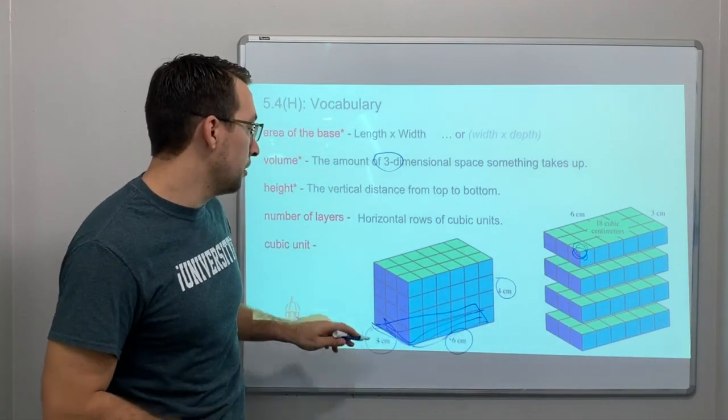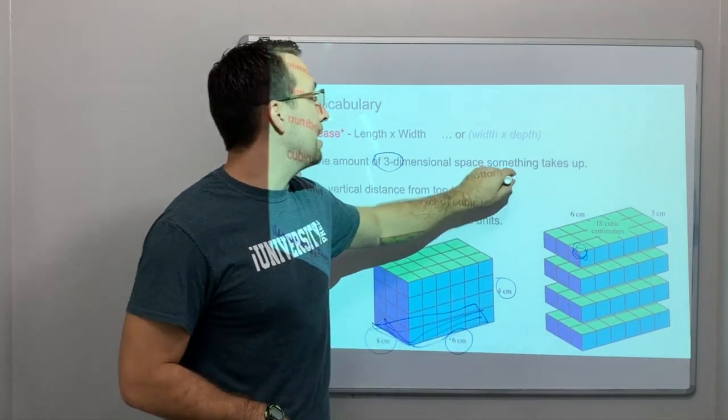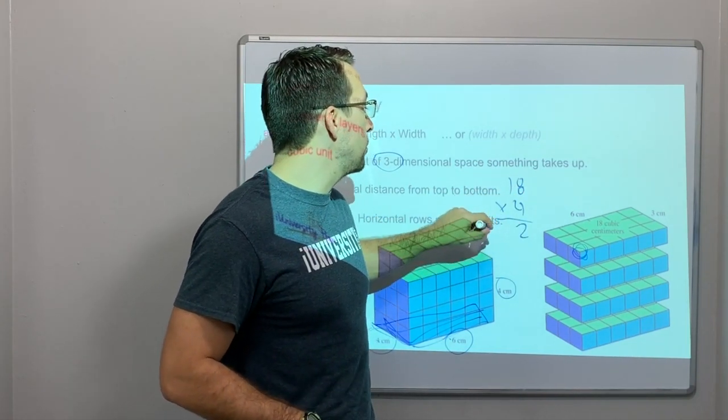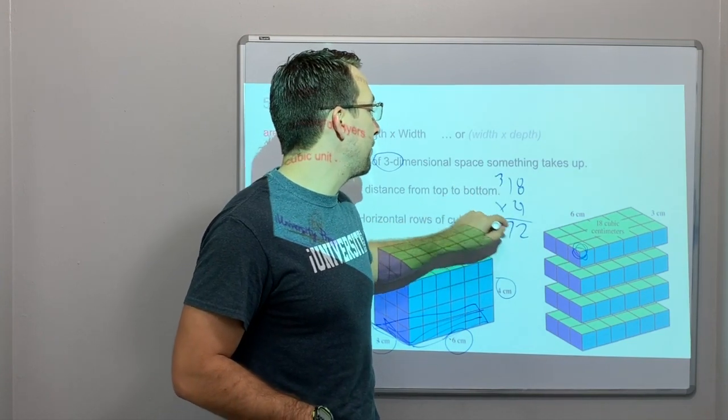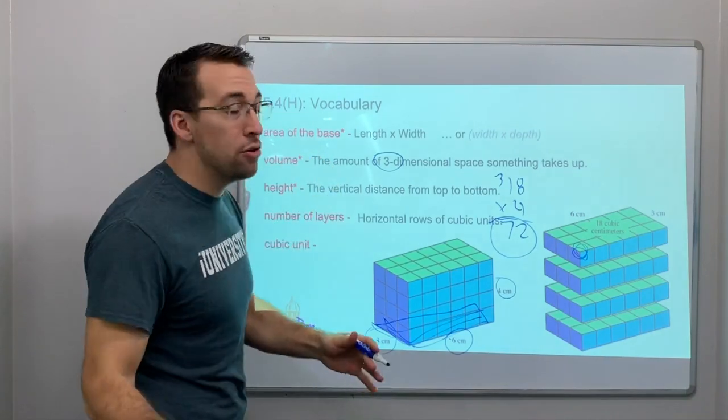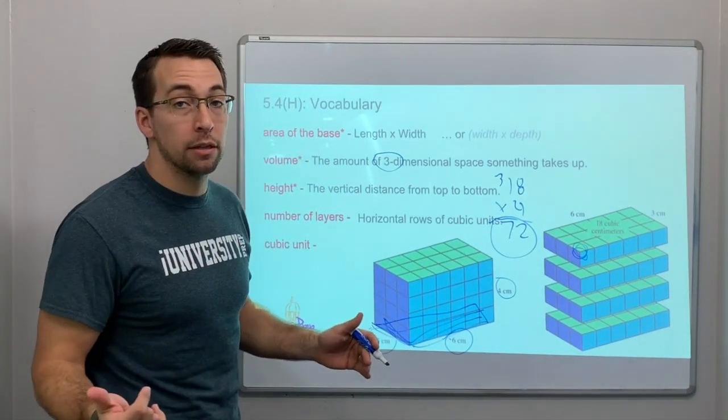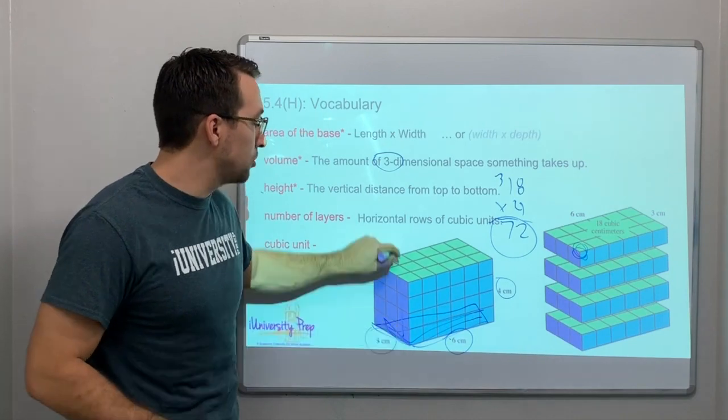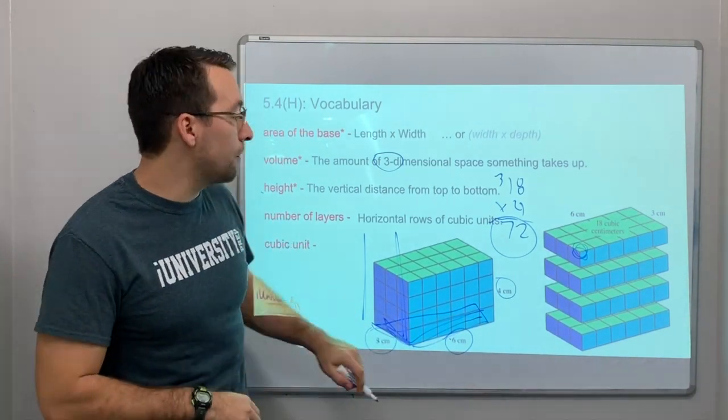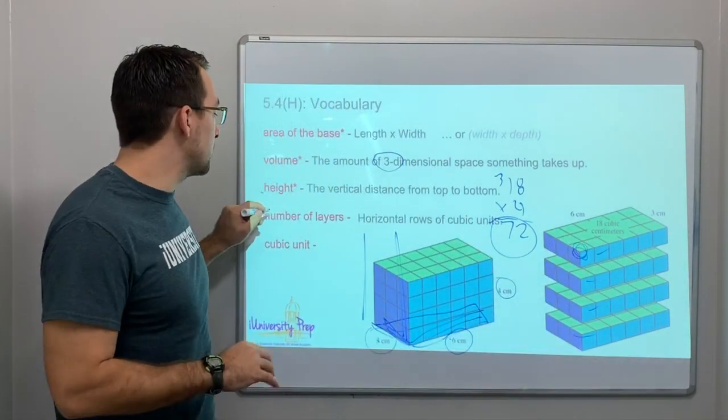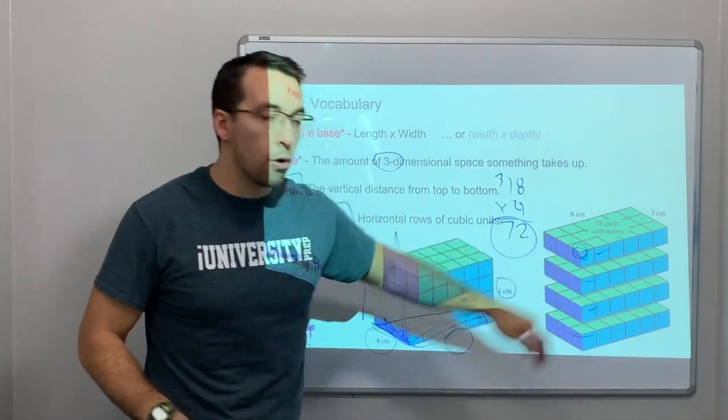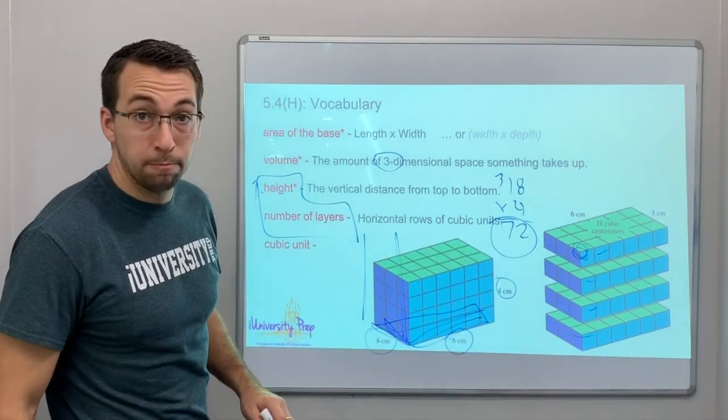It's got 3 wide by 6 long and 4 tall. What's 3 times 6? 18. That's our area - that's the bottom layer. Then 4 tall. What's 18 times 4? Four times 18 is 72. This prism has a volume of 72 cubic units. The height is how tall is the object - 4 units tall. And the number of layers equals height.